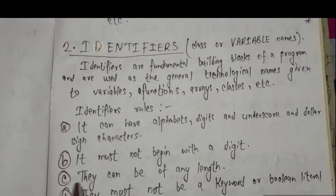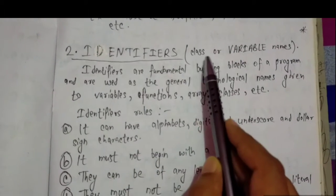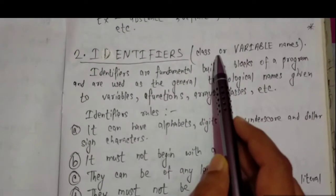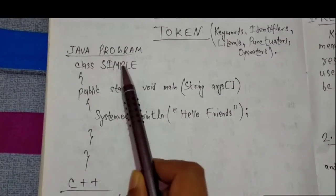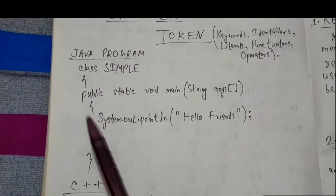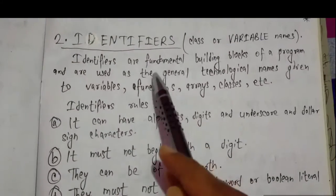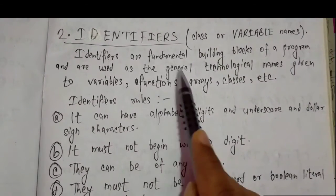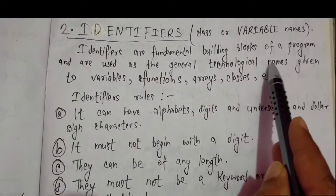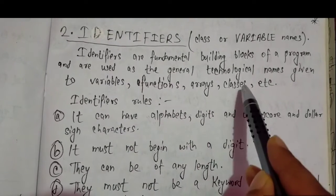Now let's move to the next token - identifier. These are normally used as class name or variable name. Here we have class simple. Simple is the name of the class, and here we have no variable. Identifiers are fundamental building blocks of a program and are used as general technological names given to variables, functions, arrays, classes, etc.